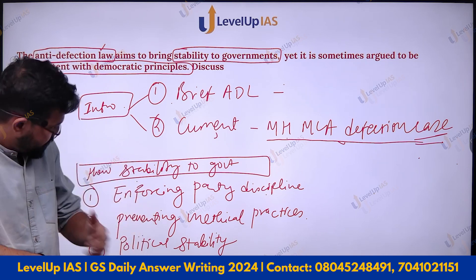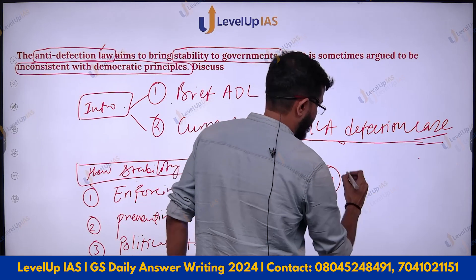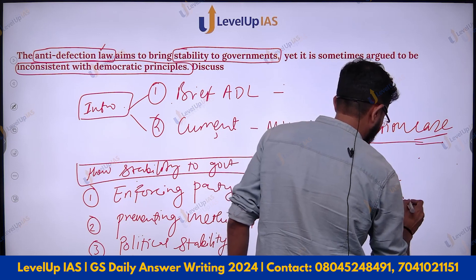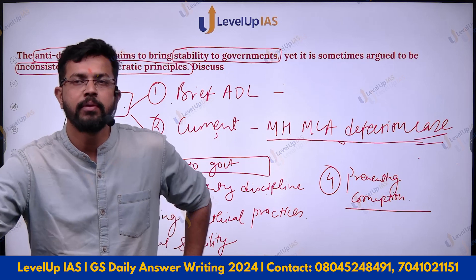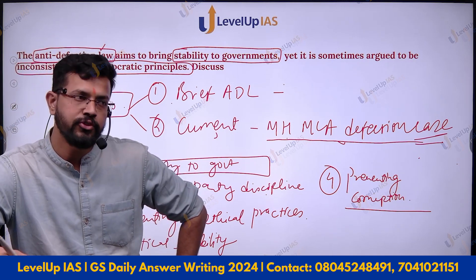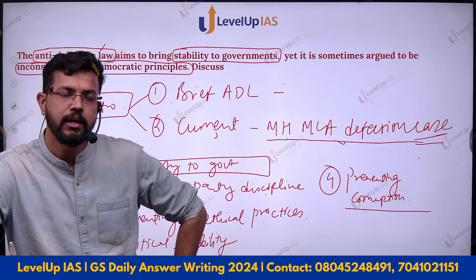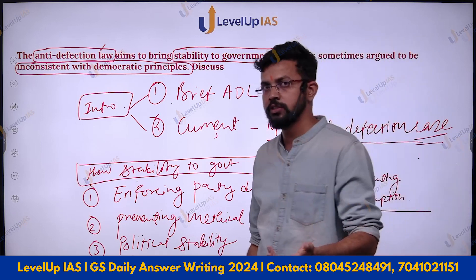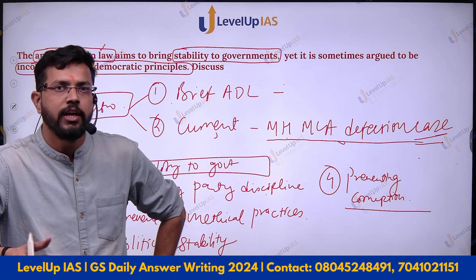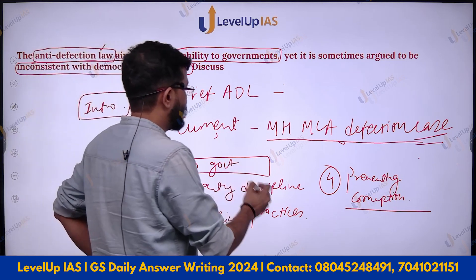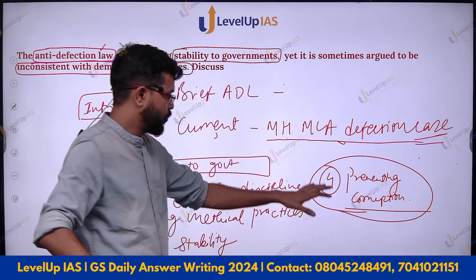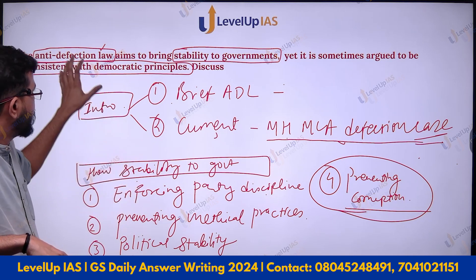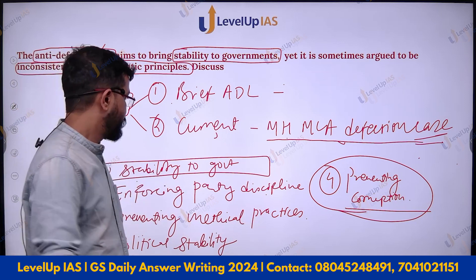The next point is preventing corruption. Bribery is not allowed. We have seen horse trading — where money is given to MPs and MLAs to lure them into other parties, ensuring defection and that the person leaves the political party on which they got elected. Anti-defection law also tries to prevent this. Through four to five such points, you justify how anti-defection law ensures stability to the government.